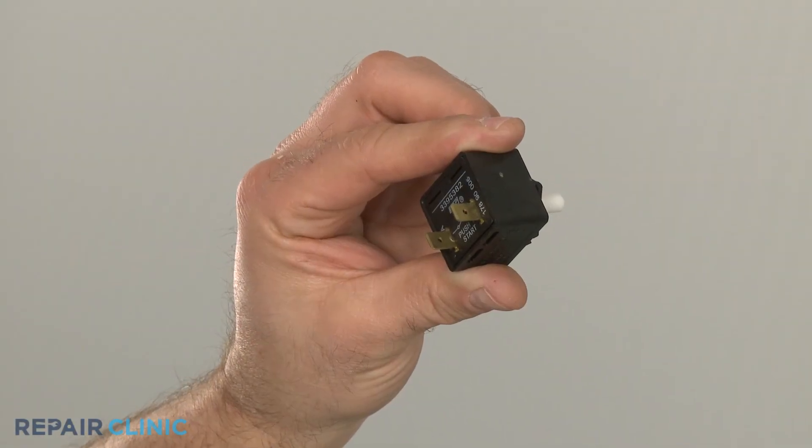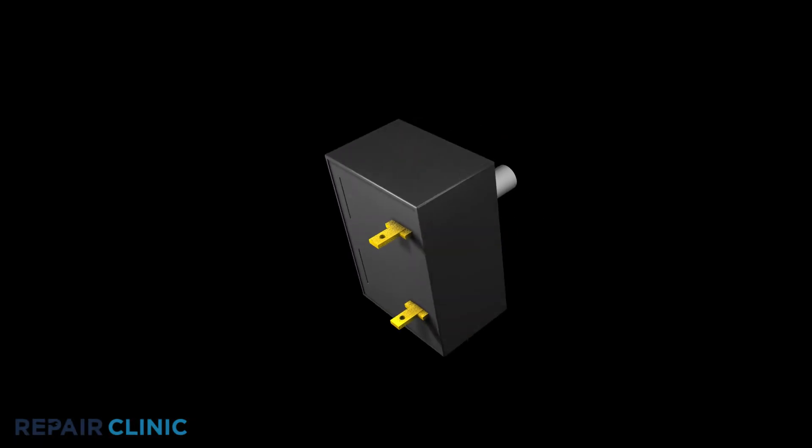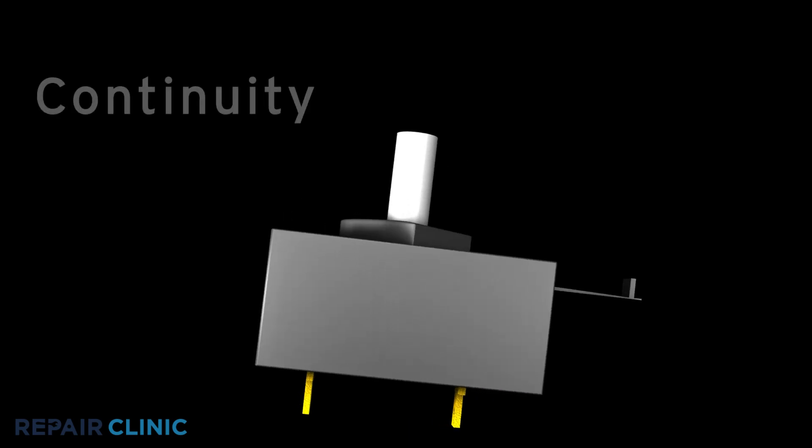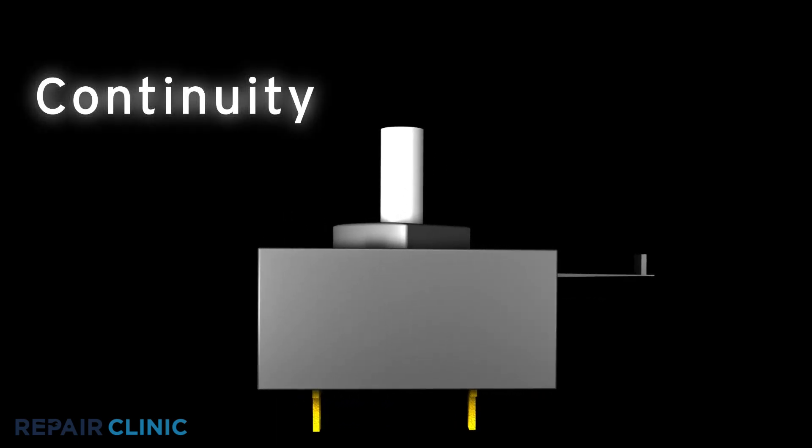Since you can't tell if a switch has failed simply by looking at it, you'll need to perform a continuity test. A continuity test will determine if a continuous electrical path is present in the switch.